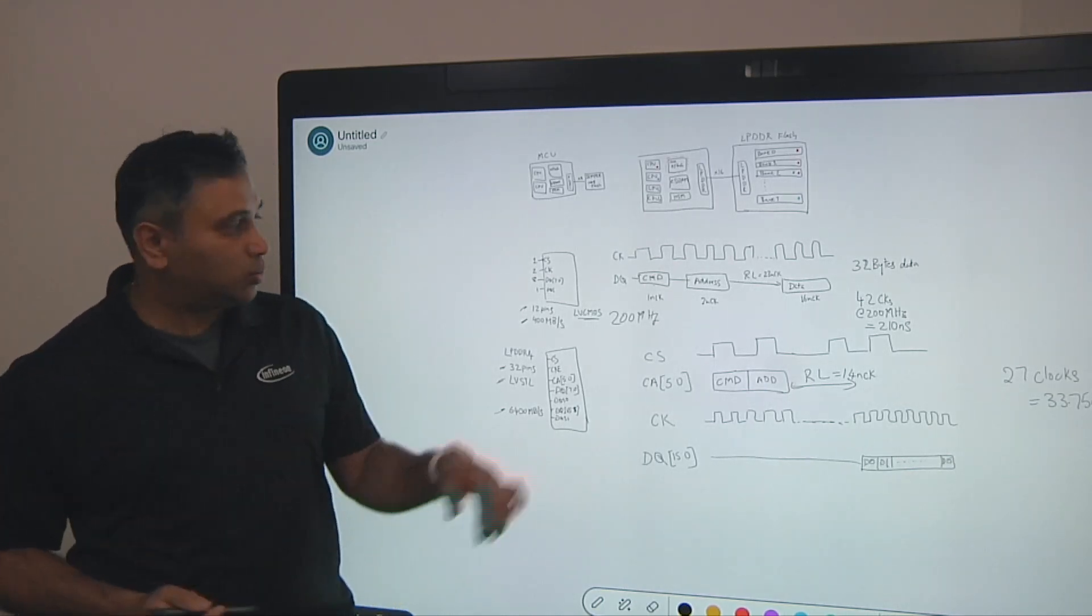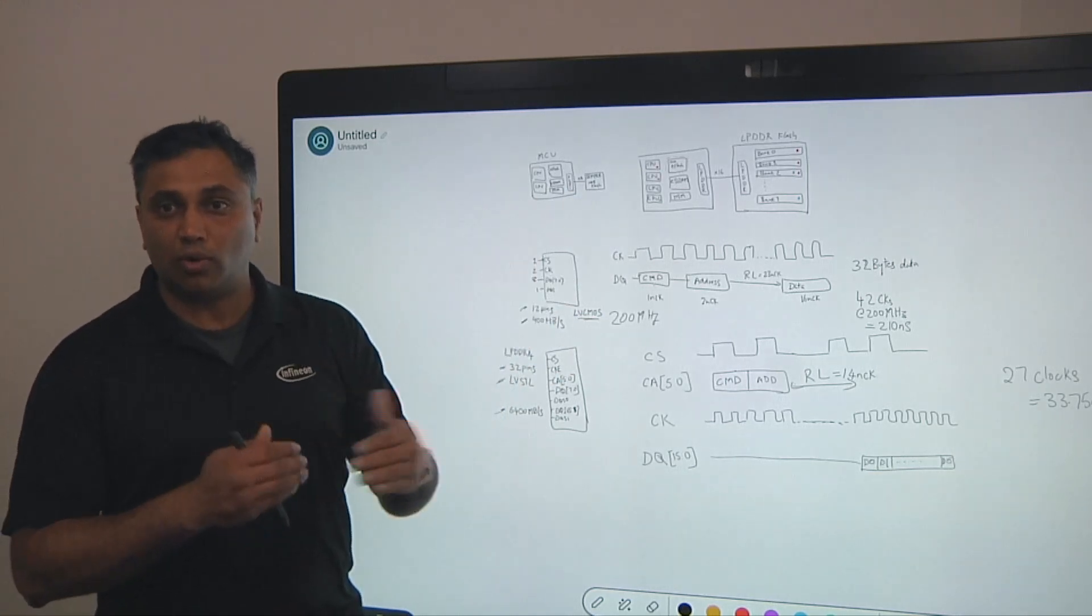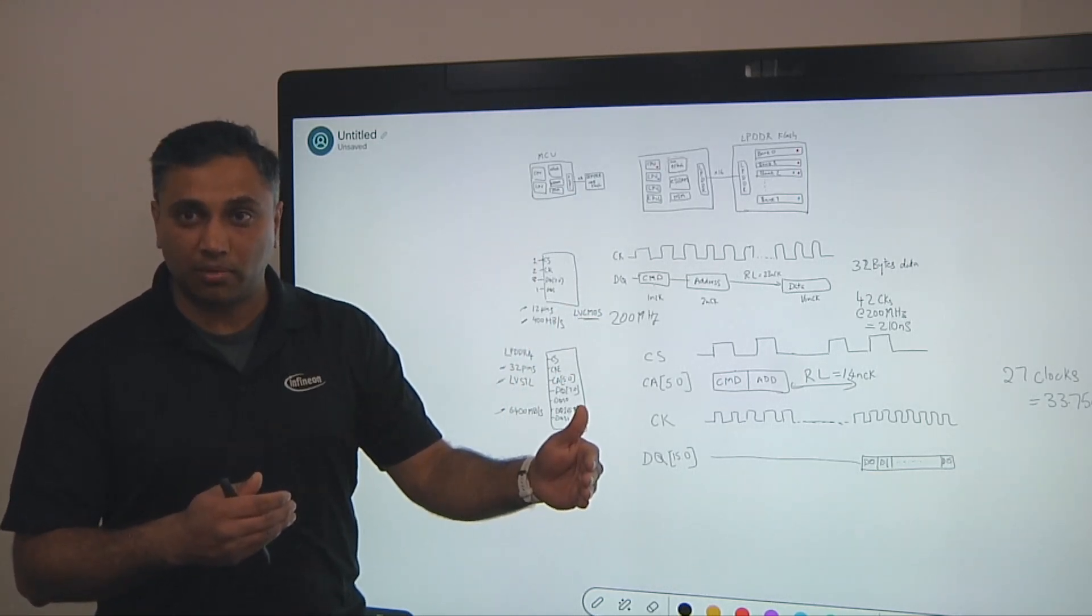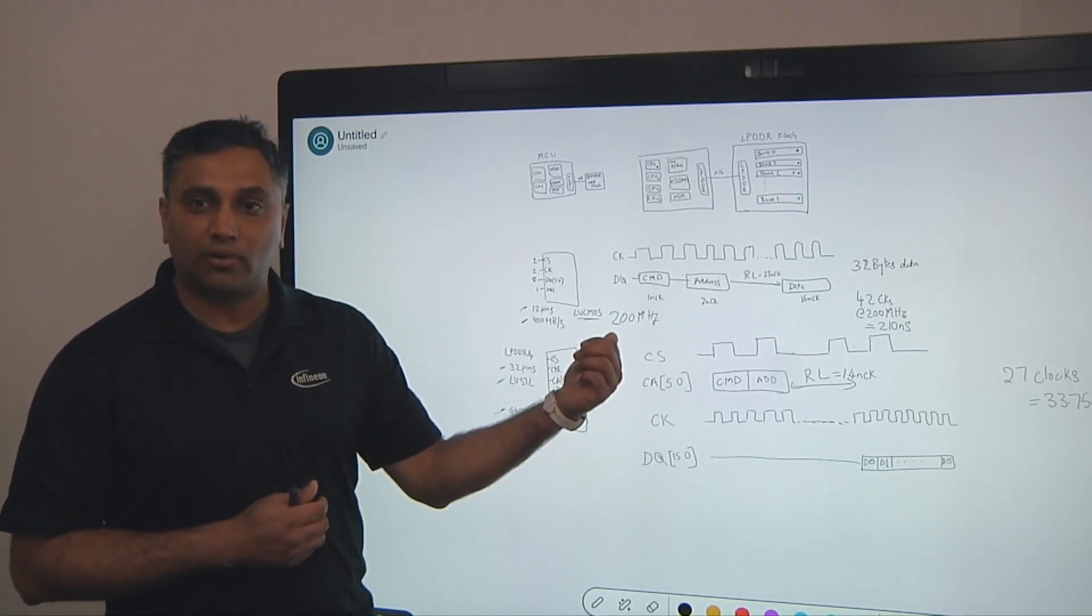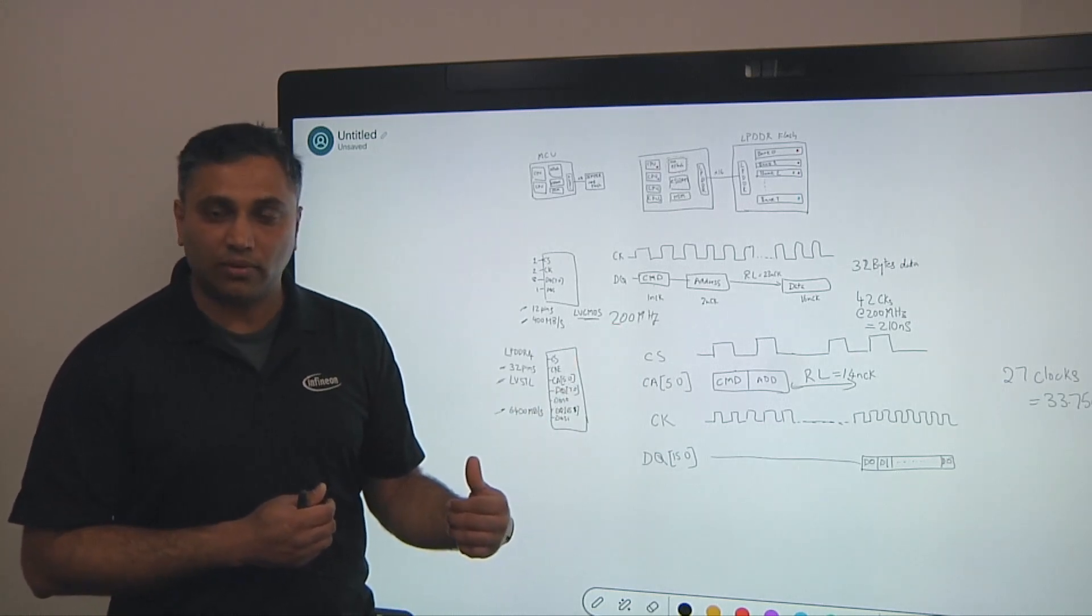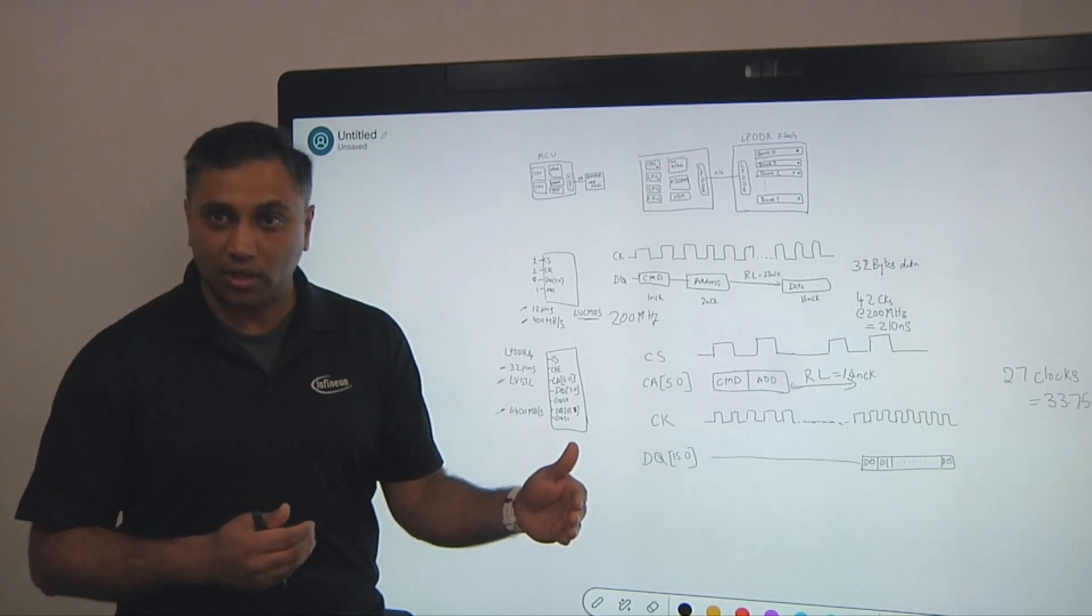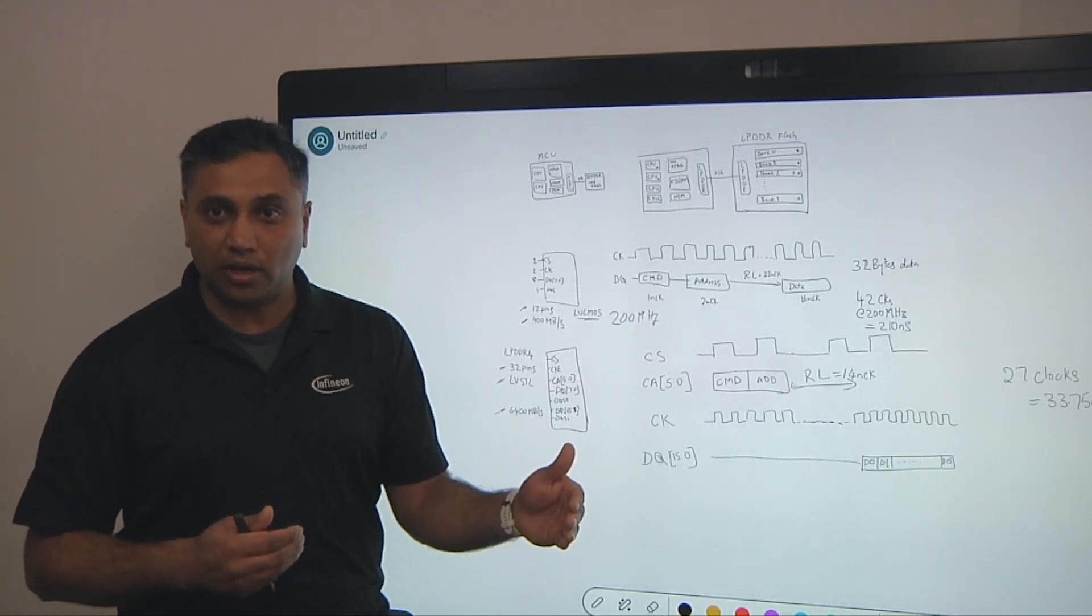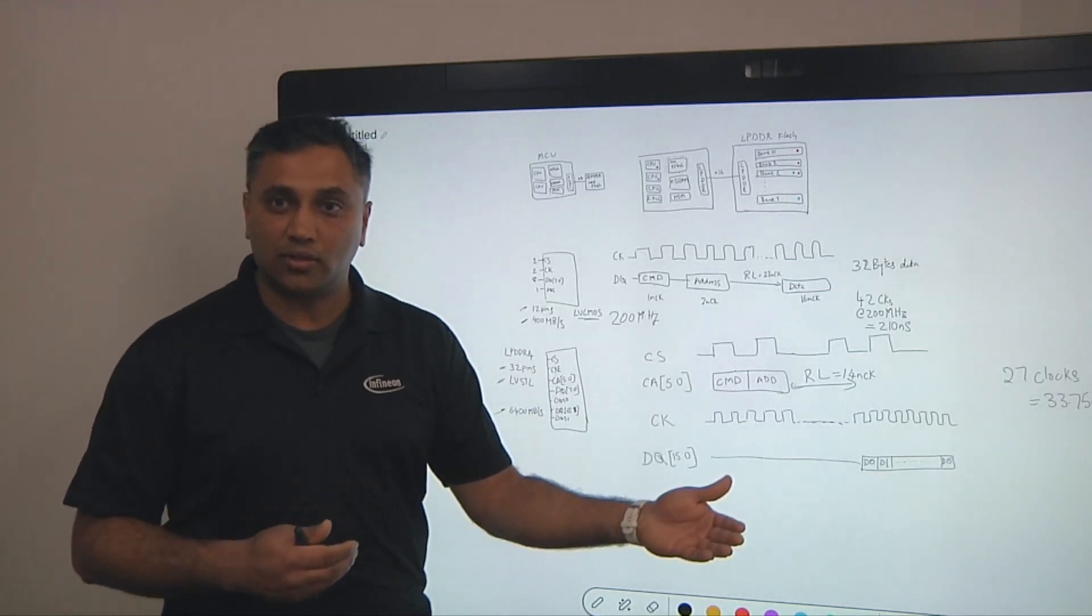Because there are two aspects. One, we needed the performance for code execution. So we wanted to pipeline the accesses to the memory. And two, the LVCMOS IOS are not capable of running beyond 200 megahertz. So we had to transition to a new interface. And we chose an interface that's already proven in the industry, a standard like LPDDR4, and tried to adapt that to a non-volatile memory. In this case, that is a flash memory.